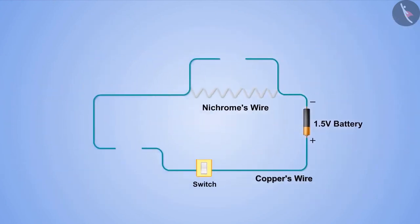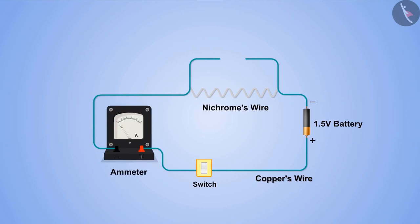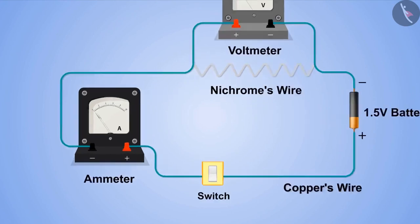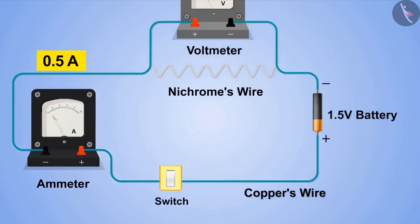Connect the circuit in this fashion. We know that the ammeter is connected in series and voltmeter in parallel. After the circuit is complete, put on the switch and write down the readings of ammeter and voltmeter in the table.